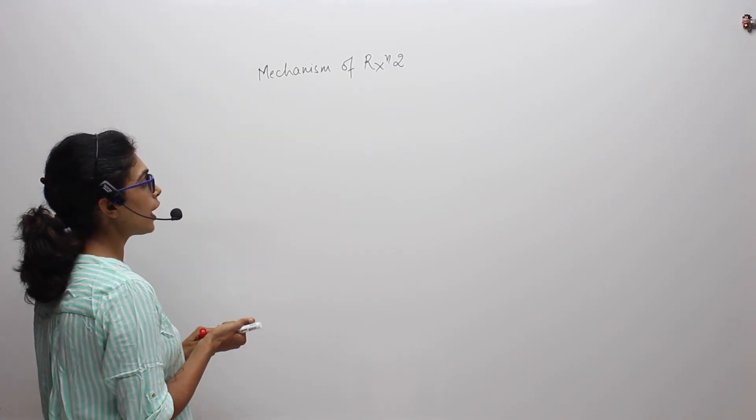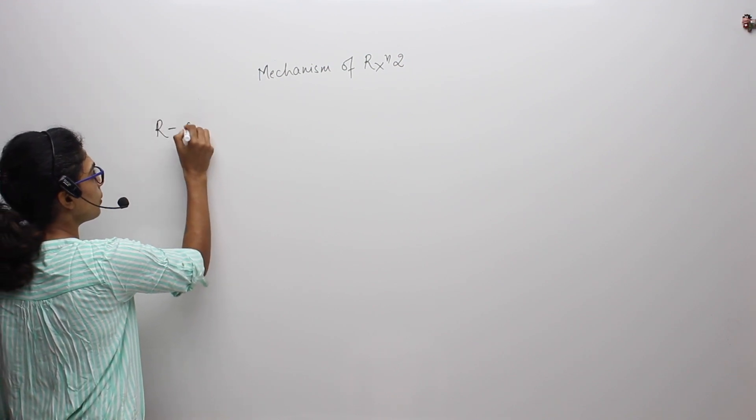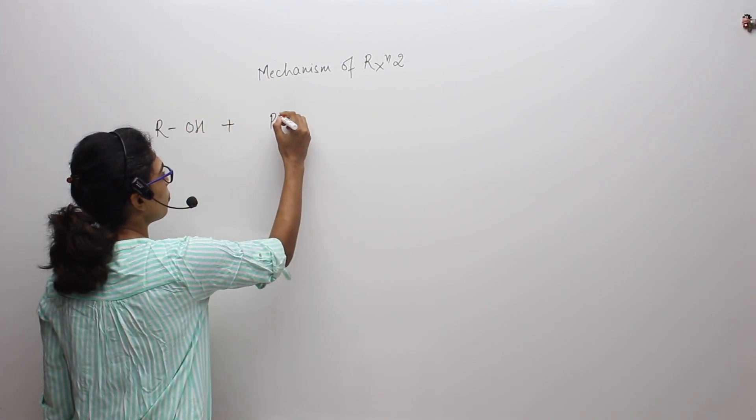So now we will discuss the mechanism of reaction 2. What was reaction 2? Reaction 2 was ROH reacting with PCl5 or PX5.